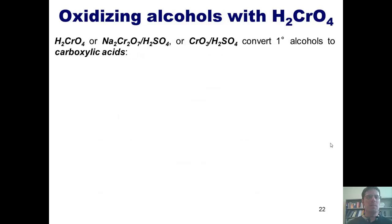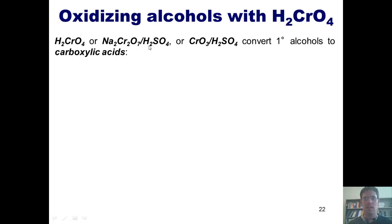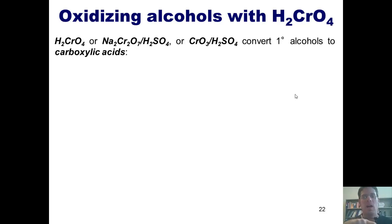Now by comparison, if you treat a primary alcohol with these reagents — dihydrogen chromate (H2CrO4), or sodium dichromate (Na2Cr2O7) and sulfuric acid, or chromate itself (CrO3) and sulfuric acid — it will oxidize my alcohol by as many bonds as the carbon has bonds to hydrogen.